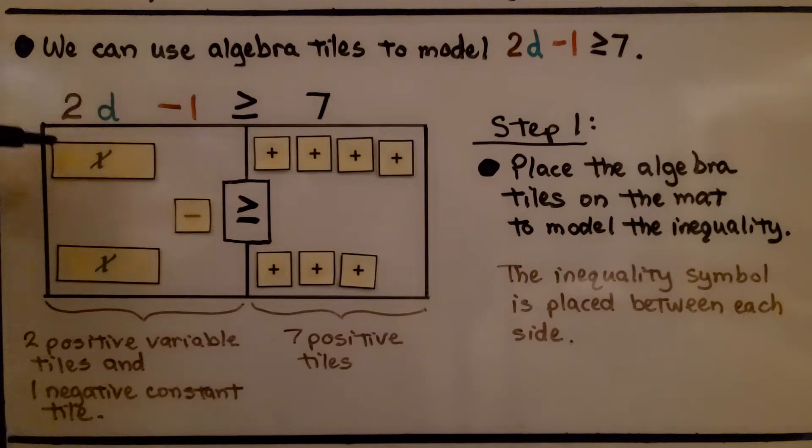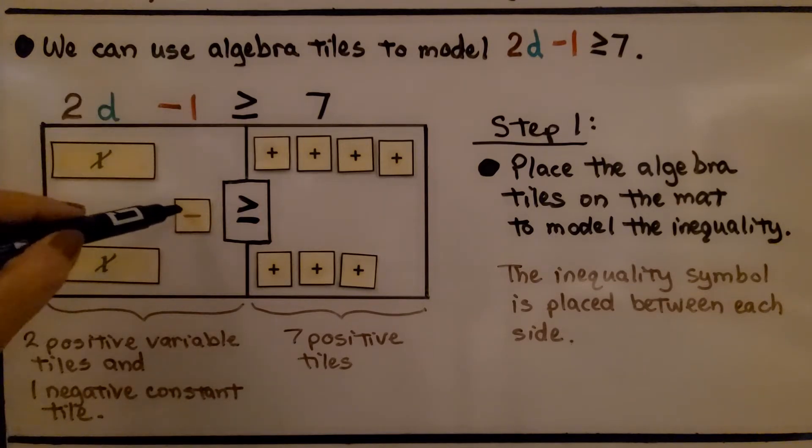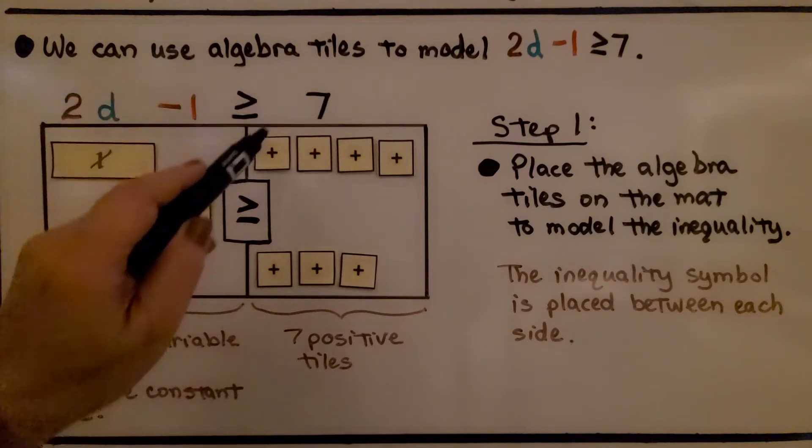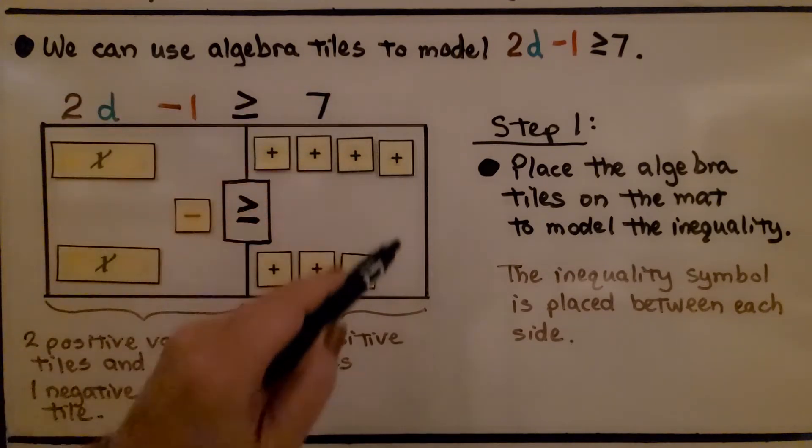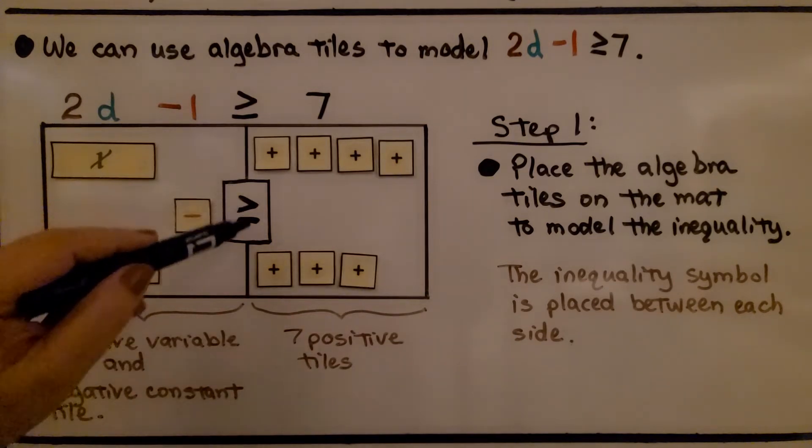For the 2d, we have two variable rectangles. I know they say x on them, but we're going to have them represent d, and we have two of them. That's our coefficient telling us that we have two of them. We're going to minus one, so that's our constant. We have a minus square here, and it's greater than or equal to seven, so we have a positive seven. We have seven little plus squares, and we have our symbol here.